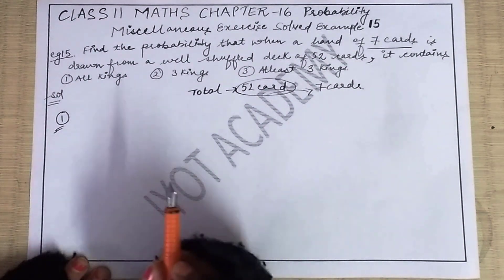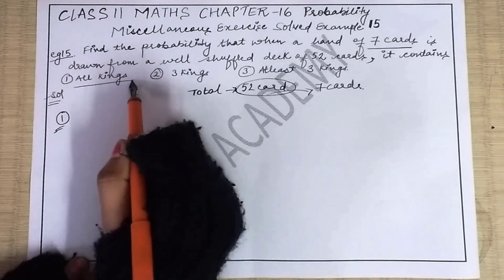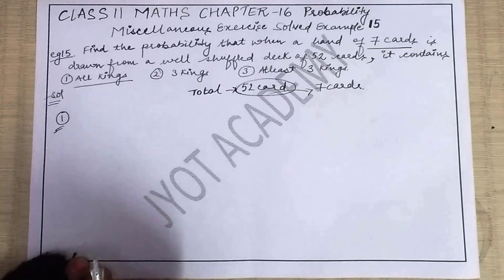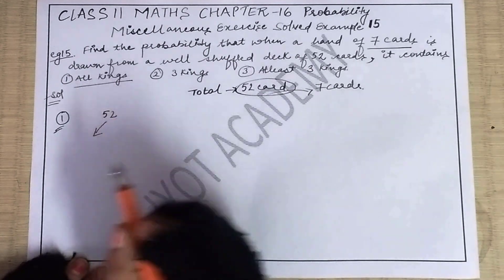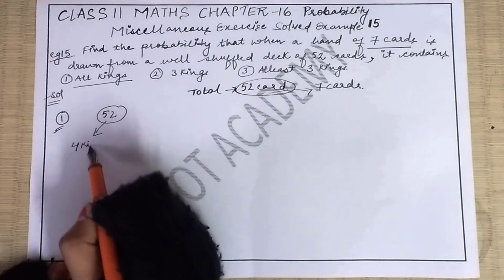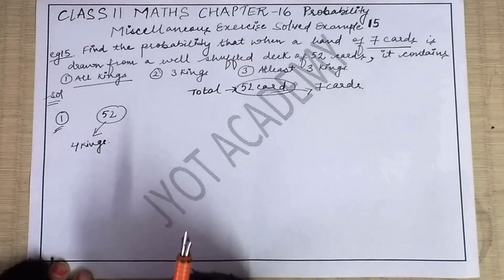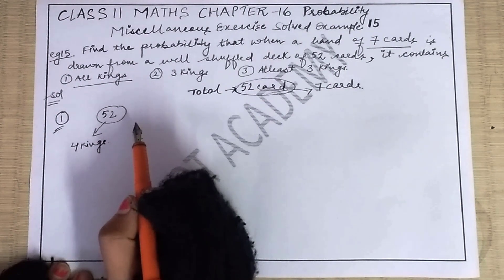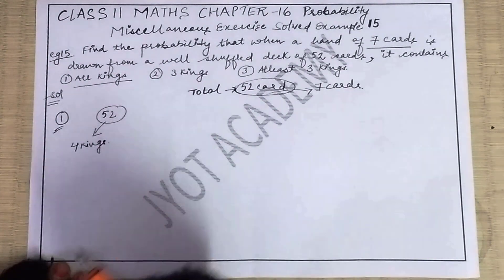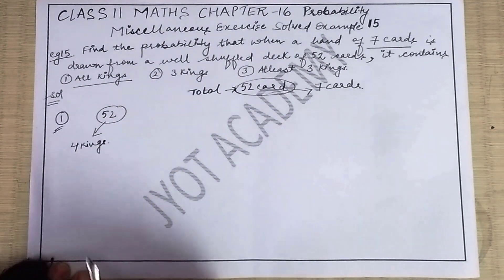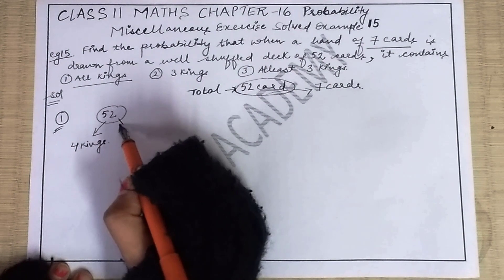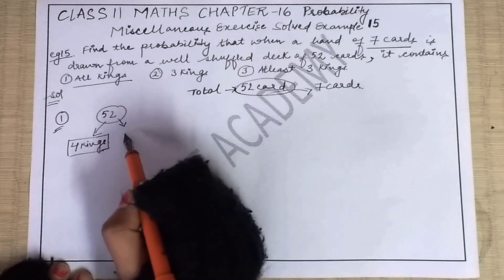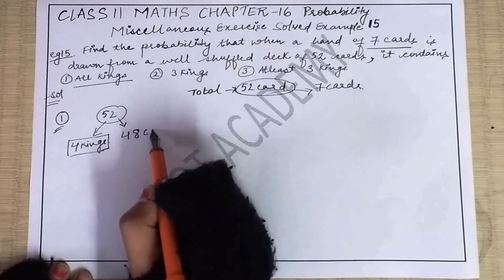The first condition says find the probability for seven cards when all kings are required. Before that, it is important to know how many kings are in 52 cards. There are only four kings available in the entire deck of 52 cards, because there are four suits, each suit has 13 cards, and each suit has one king — so total four kings, just like there are four aces.